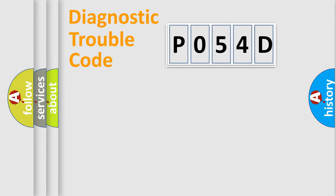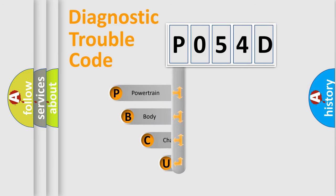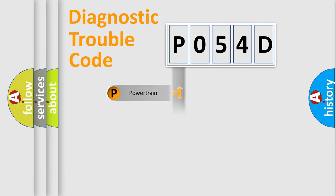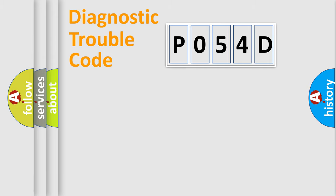Let's do this. First, let's look at the history of diagnostic fault code composition according to the OBD-II protocol, which is unified for all automakers since 2000. We divide the electric system of an automobile into four basic units: Powertrain, Body, Chassis, and Network.